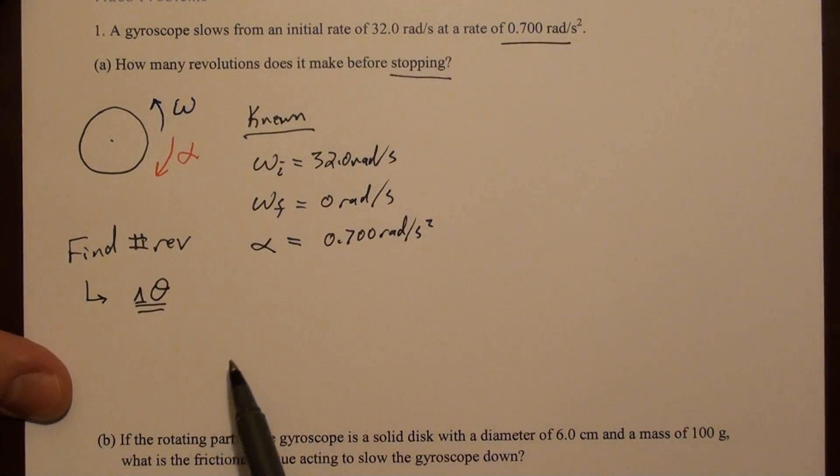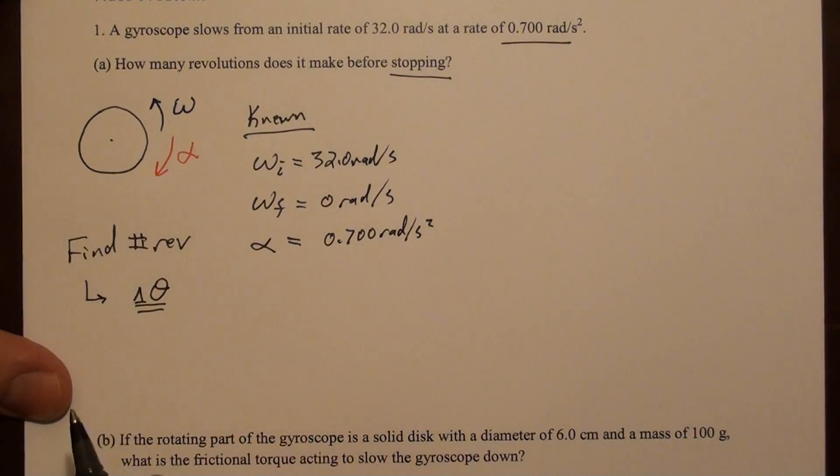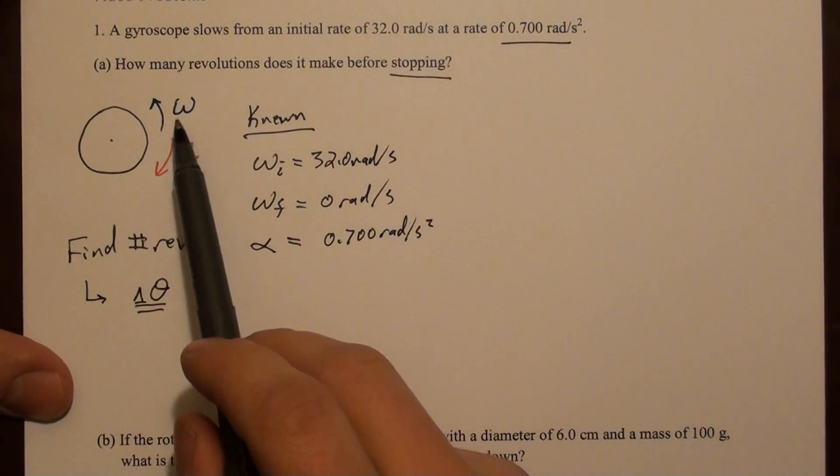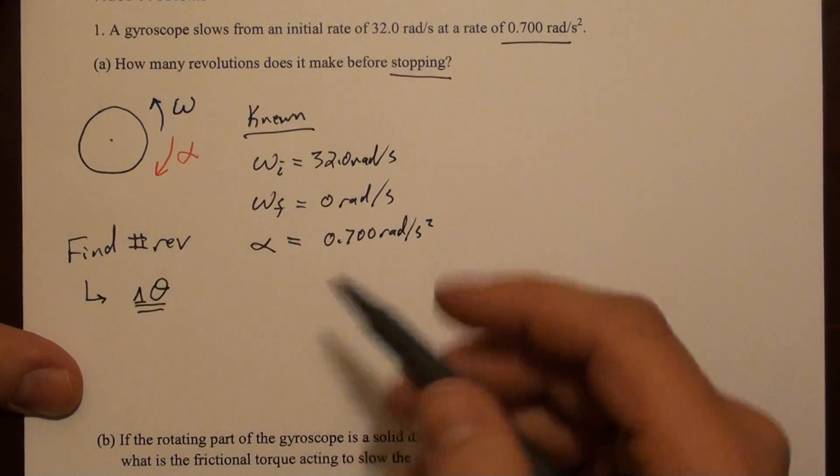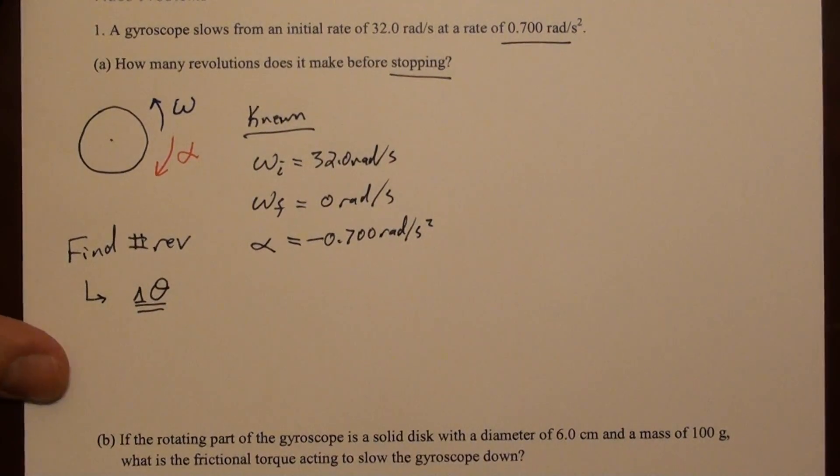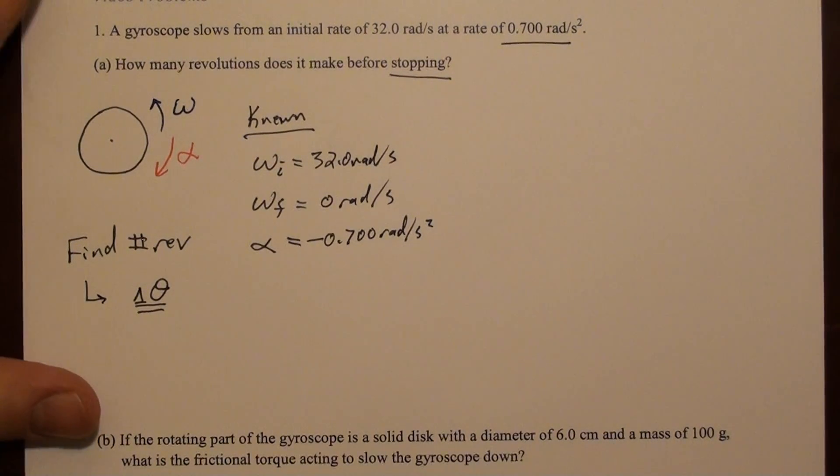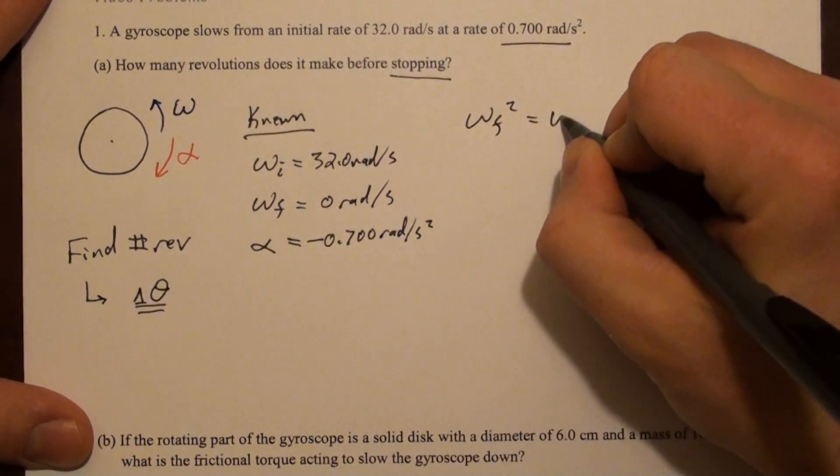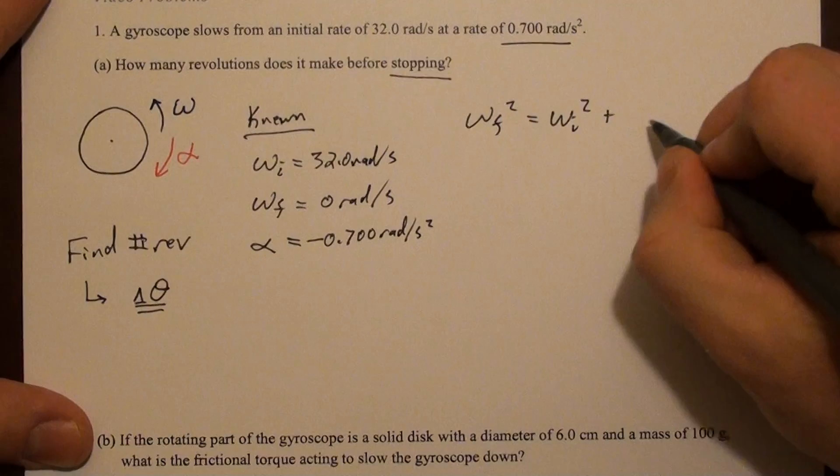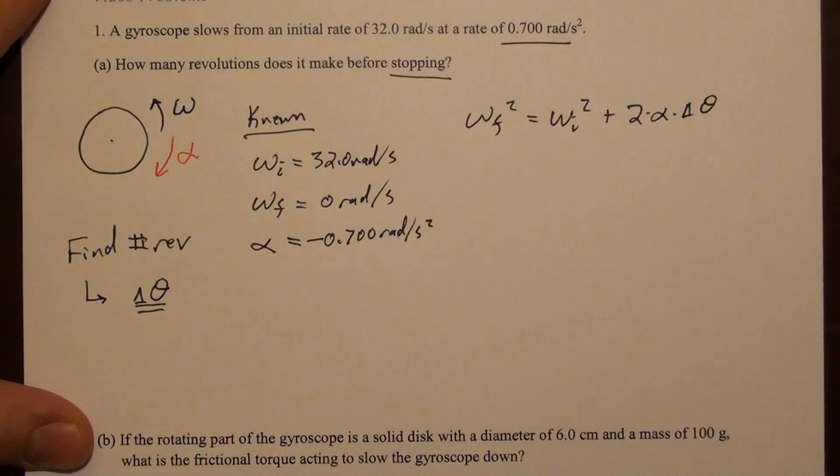And again, if this is coming to rest, then omega and alpha are pointing opposite directions. So the way I've drawn it here, omega is counterclockwise, which is positive. And alpha is opposing that, so clockwise, which is negative. That's arbitrary. I'm not told whether this is rotating clockwise or counterclockwise, and it actually doesn't matter. Because what we're looking for is a delta theta ultimately, or a number of rotations, and that doesn't necessarily need to have a sign. So, we're looking for a delta theta. We know these things. If you look at the list of rotational kinematic equations, you can argue that this is the equation you should use, or maybe the most direct way to solve for delta theta.